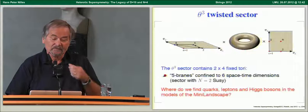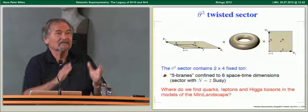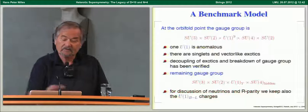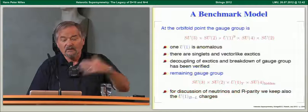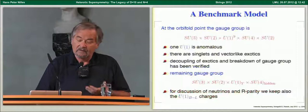After constructing these models, the question is: where do we find quarks, leptons, and Higgs bosons in the realistic models? There is a benchmark model where at fixed points we have enhanced gauge symmetries. One of the U(1)s is anomalous, which drives some fields to acquire non-trivial vacuum expectation values. These break other U(1)s, and we worked out the full vacuum structure to make all exotics heavy and break additional U(1)s. At the end, what remains is the standard model spectrum plus singlets.